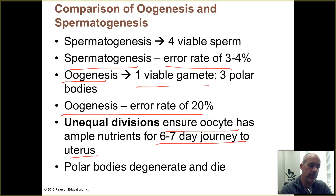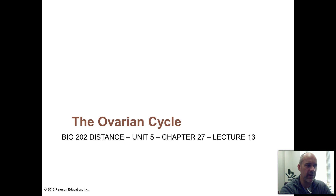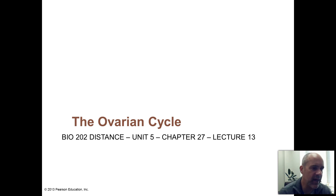The polar bodies — those little cells that are mainly just an extra set of chromosomes — degenerate and die, as far as we know. That's an overview of oogenesis.